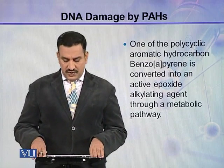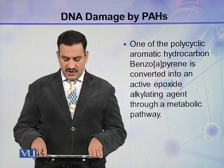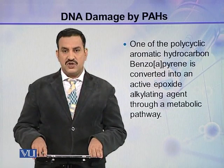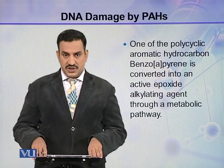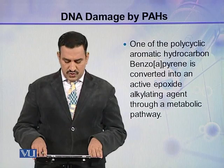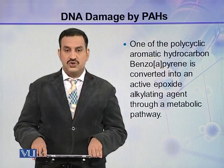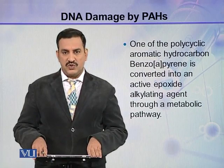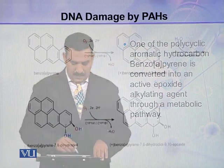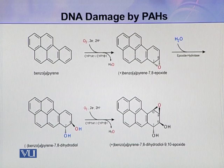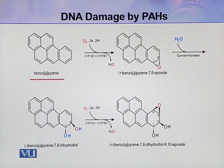One of the polycyclic aromatic hydrocarbons is benzopyrene. It is converted into an active epoxide alkylating agent through a metabolic pathway in the cell. Here is the pathway which converts this PAH into an epoxide, which is the damaging agent. This is benzopyrene.